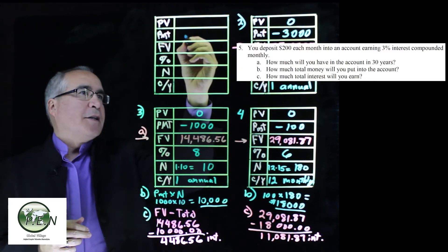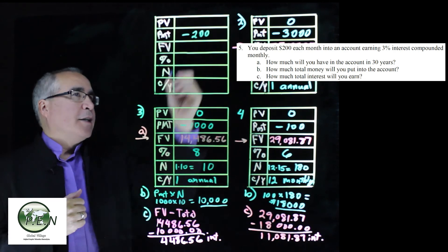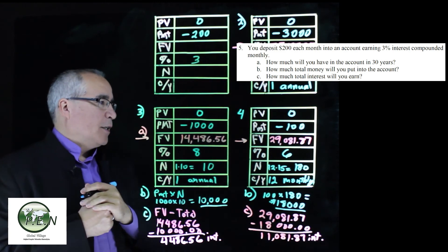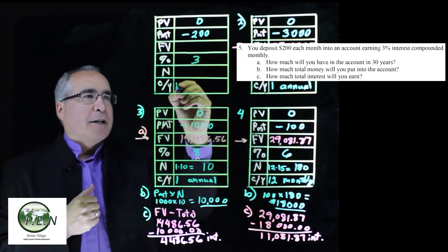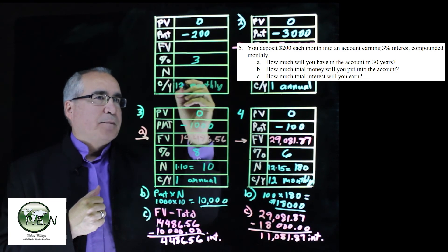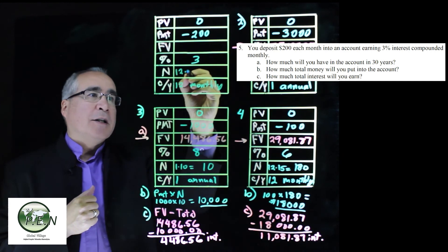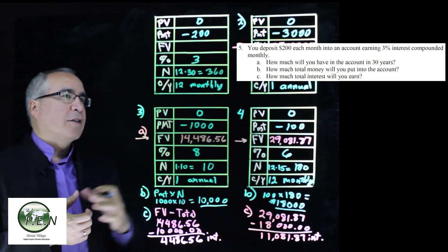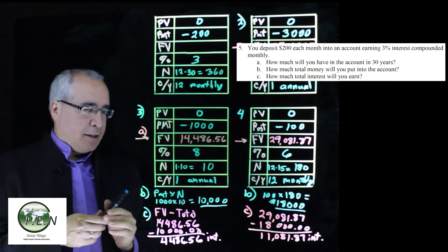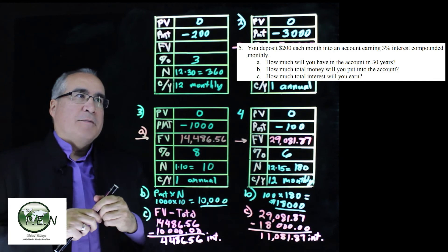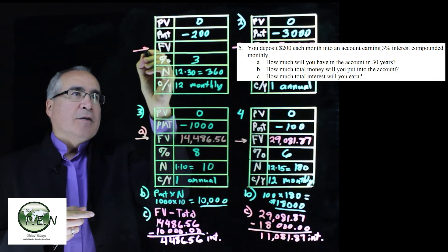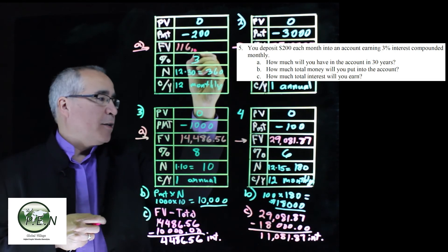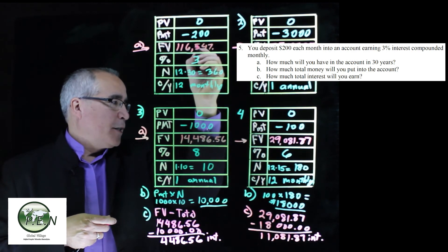We deposit $200 every month into an account. So that's a payment. There is no present value, no lump sum up front. We're going to get 3% interest, and we're going to compound monthly. So that is 12 times how long are we going to do this? 30 years of savings. That is 12 times 30 is 360 periods, 360 months in 30 years. We first need to get the future value of what we will end up with. So this is going to give us the answer to the A part. We do this, we end up with $116,547.38.